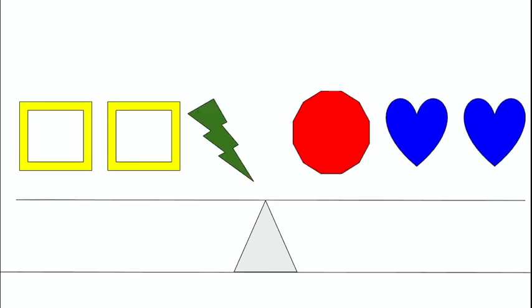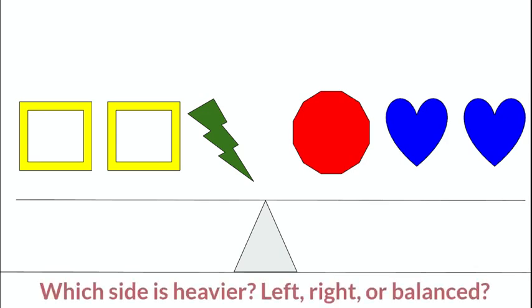Okay, now let's look at this seesaw. The shapes are floating above this seesaw, and in just a minute they're about to come down and land on the seesaw, but before they do, answer me this. Which side of the seesaw will be heavier? The left side, the right side, or will it be balanced?